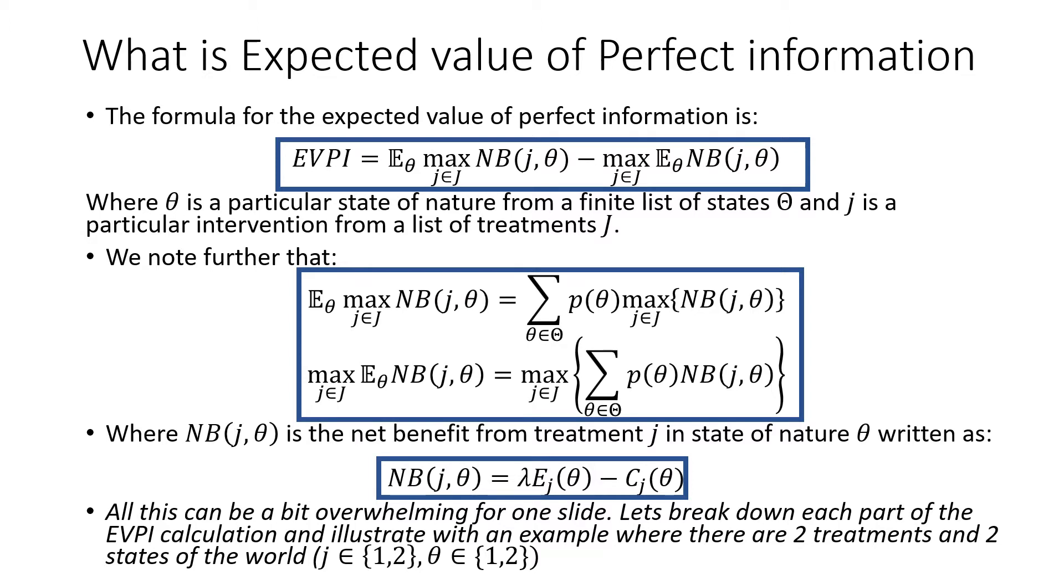We further note that these expectations could be written as standard expected values, where P(theta) is the probability of state of the world theta, where NB(j, theta) is the net benefit from treatment j in state of nature theta, which is written as follows. All this can be a bit overwhelming on one slide, so let's break this down part by part and illustrate with an example where there are two treatments and two states of the world.